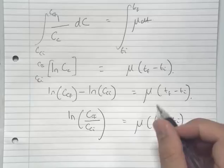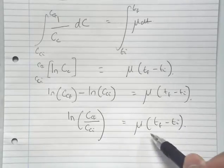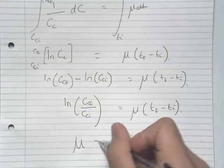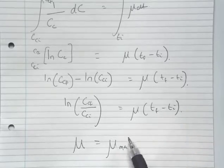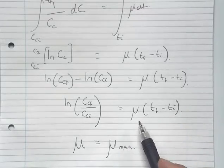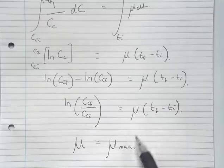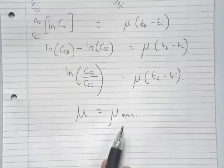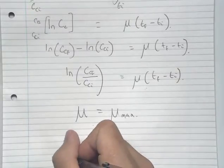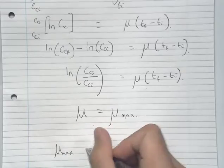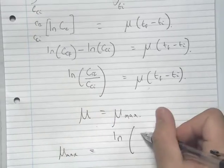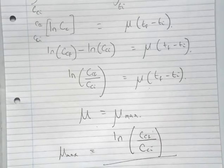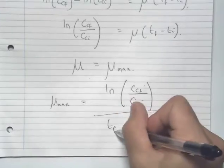As the question states that the cells are growing at our maximum specific growth rate, so mu is equal to mu_max. The question asks for the maximum specific growth rate, so we can rearrange this equation for mu_max: mu_max is equal to the natural log of our final concentration over our initial concentration, divided by our time component.